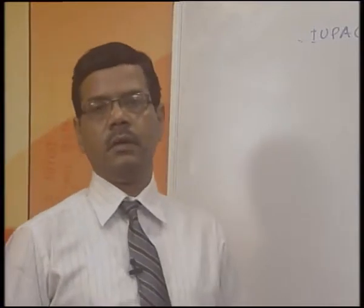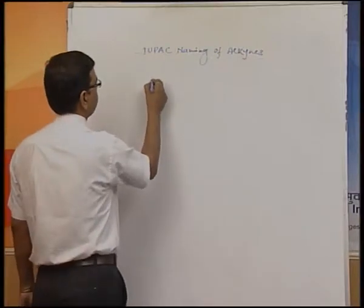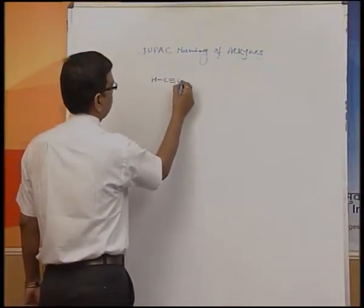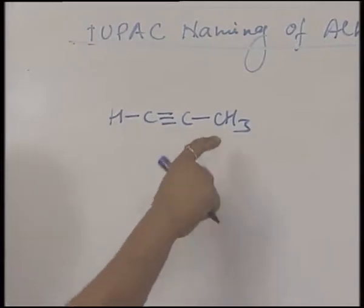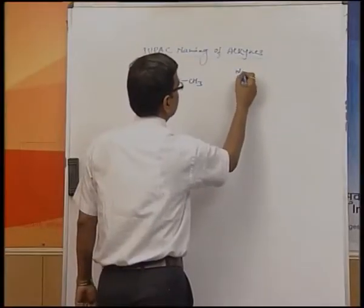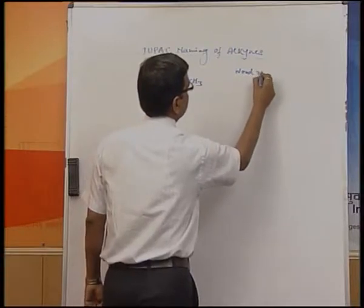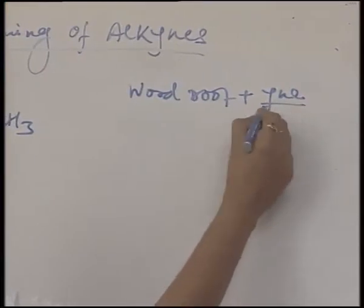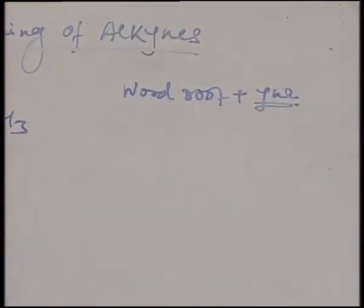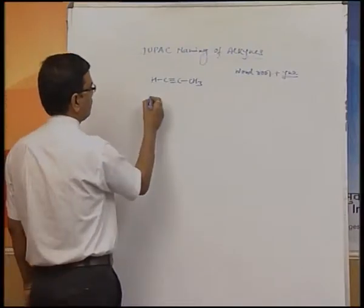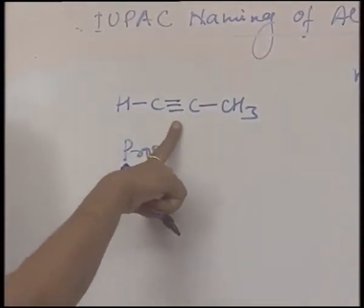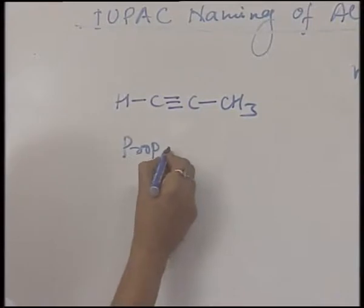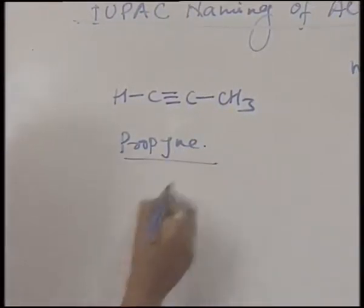Let us see some examples of how to write the IUPAC naming of alkynes. For example, let us take the compound CH3 with a carbon triple bond C and CH3. For this, first we have to write the word root and then add the last word YNE. The number of carbon atoms here is 3, so the word root is prop and as it contains a triple bond it will be an alkyne, so we write YNE. The name will be propyne.